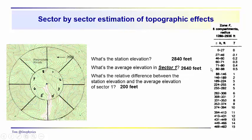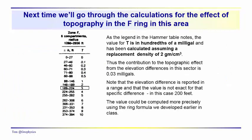Then we go over to the hammer table. We say we're between 189 and 224 feet. So that gives us a T for the topography. Remember, these are in hundredths of a milligal of 0.03 milligals. So the next time we'll go through the calculations for all eight sectors in the F zone.